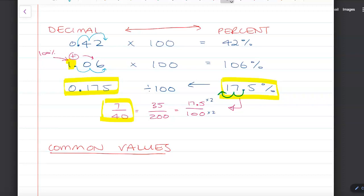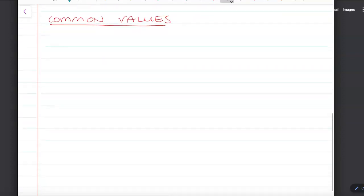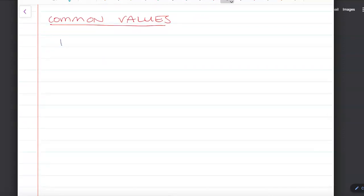This brings us to recognizing some common values. One of the most common values is one half, which is 0.5 or 50 percent. If we half a half, we end up with one quarter. Half of 0.5 is 0.25, and half of 50 percent is 25 percent, because we've simply taken half of a half.